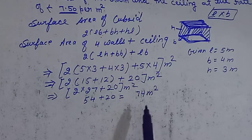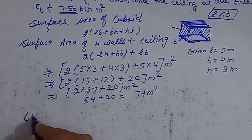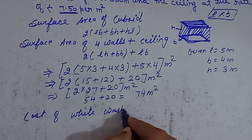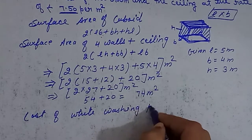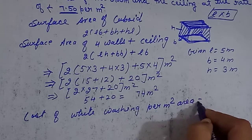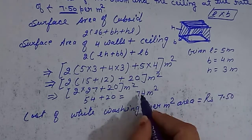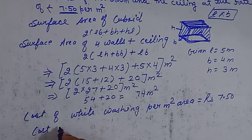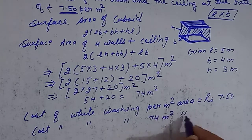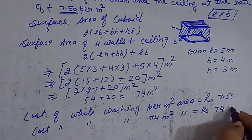Cost of whitewashing per meter square: one meter square area costs rupees 7.50. So the cost of whitewashing is the area multiplied by the rate.